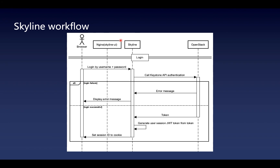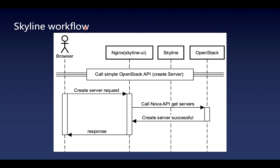Next, I will talk about the login process. During the login process, the request containing the username and password will be received by Skyline and forwarded to OpenStack Keystone for authentication. If the authentication fails, an error will be returned and the browser will display an error message. But if the authentication is successful, Skyline will use the Keystone token to generate a user session JWT token. It will set the session ID to cookie and return it to the browser. Next is an example of calling a simple API. When creating a server, the request is directly forwarded to OpenStack Nova service through Nginx, and the success or failure response will be returned.